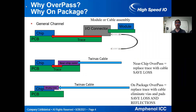Why overpass, why on-package for channels? At the top of the screen is a sketch of a general channel. We've got a circuit board, a chip on the circuit board, trace to an IO panel connector, and a module plugged into the connector or a cable assembly. For a cable assembly, it goes from the chip to the cable assembly and then back to the chip through the same components a second time: module mating interface, connector, trace, chip.